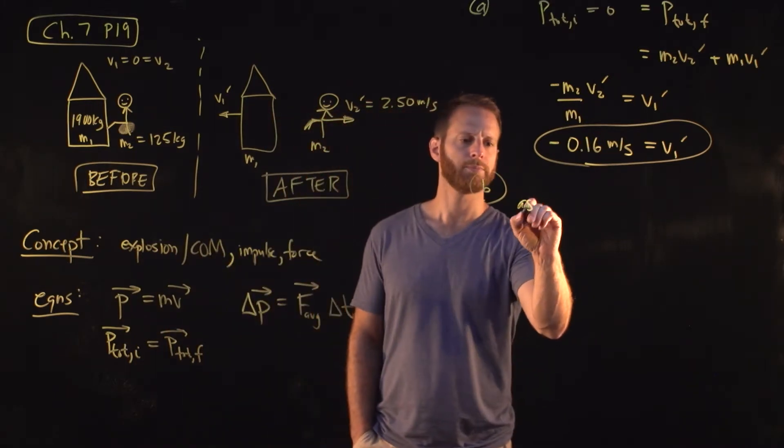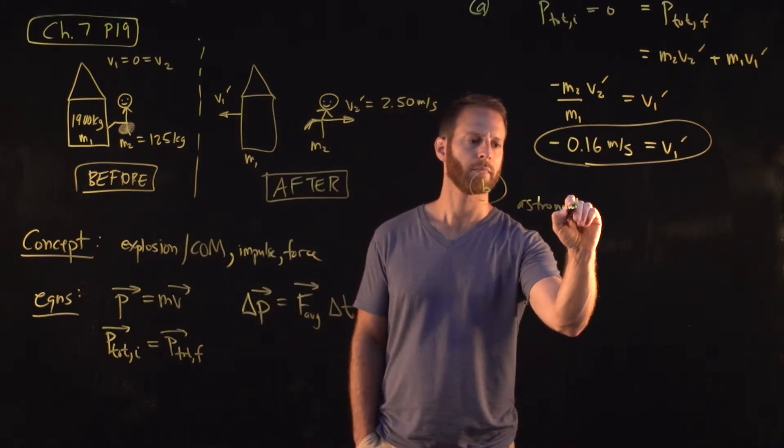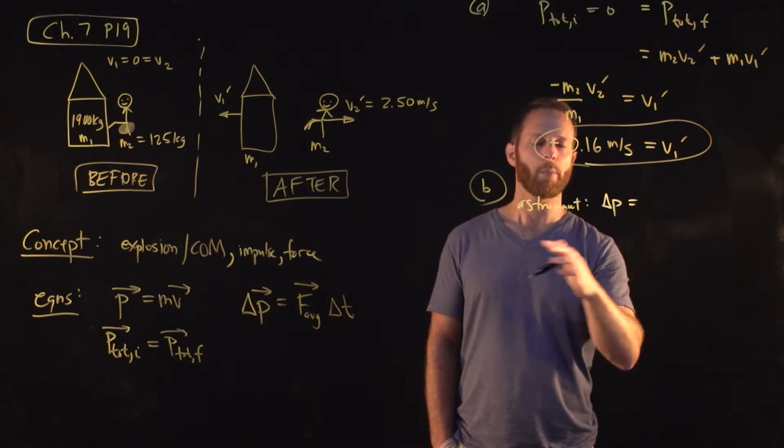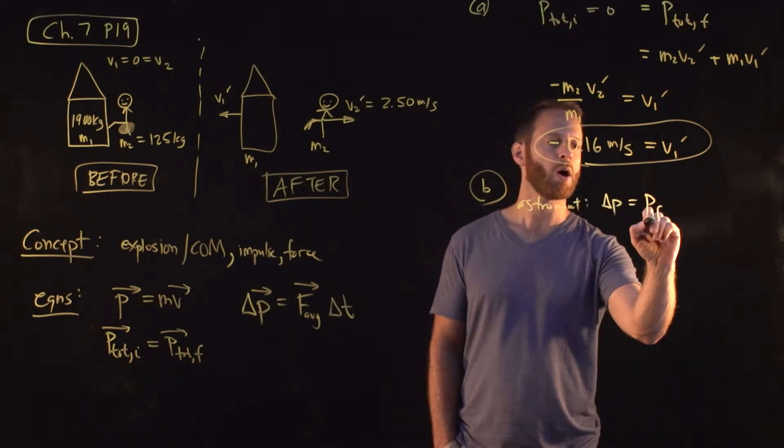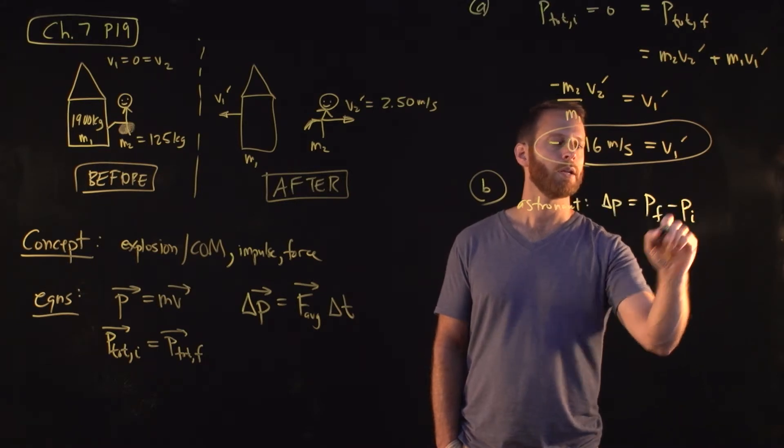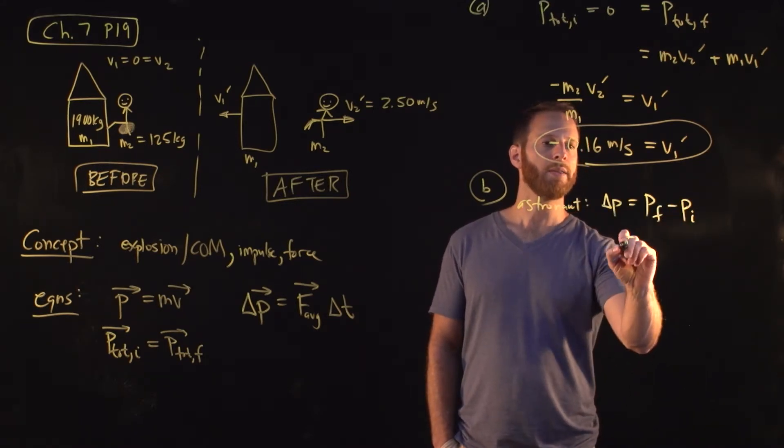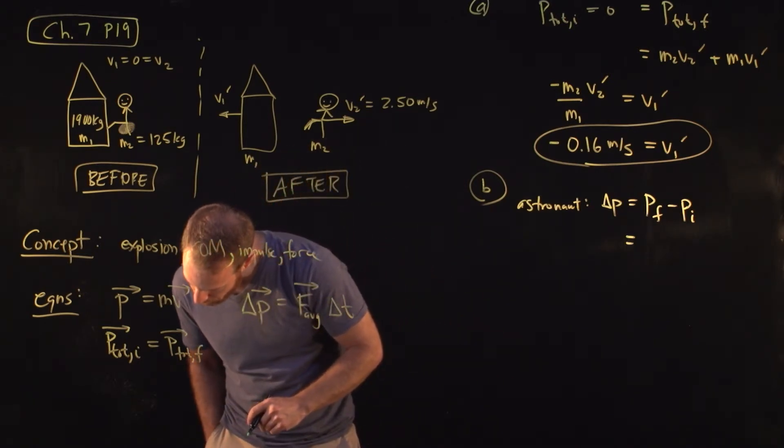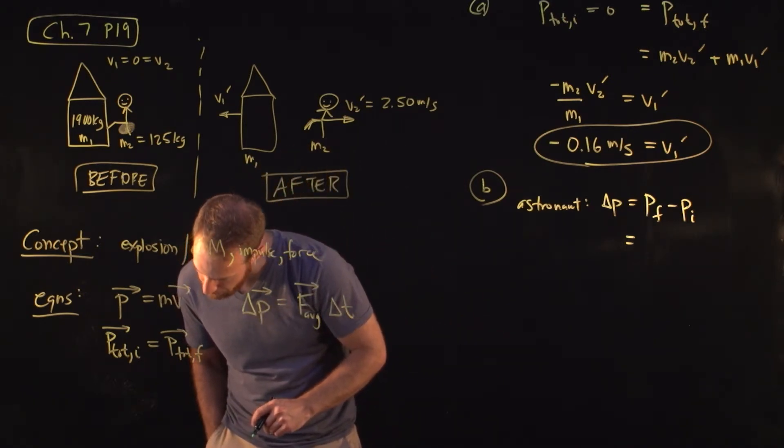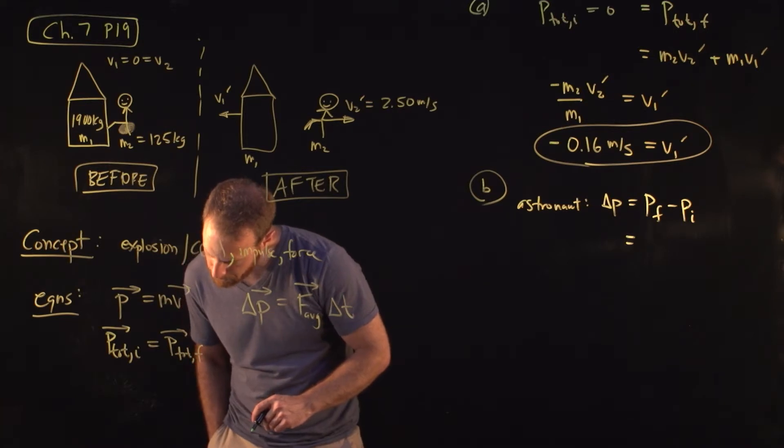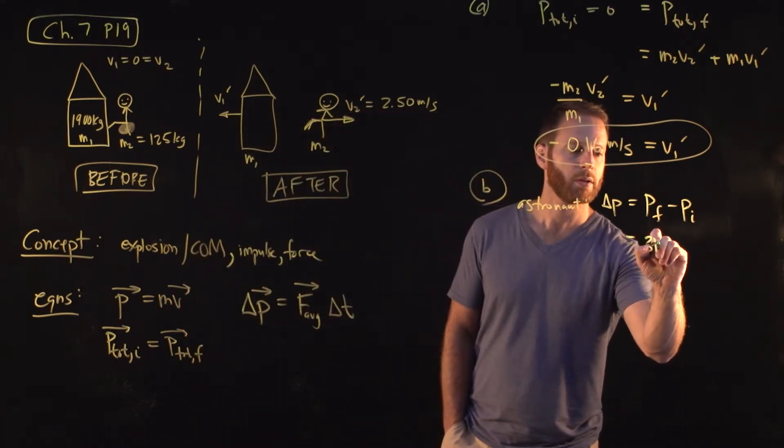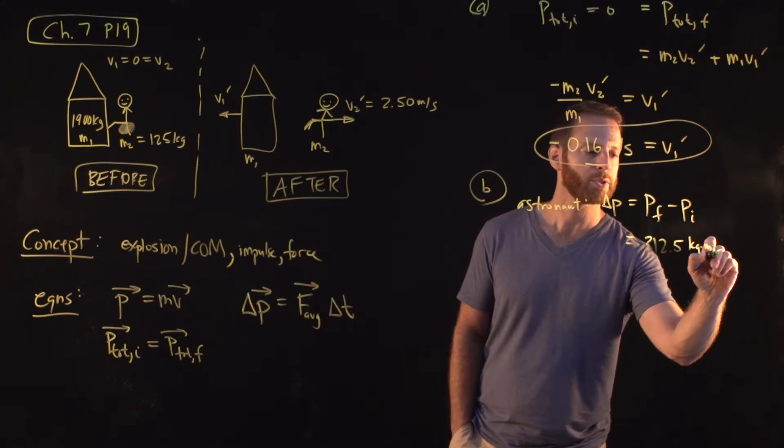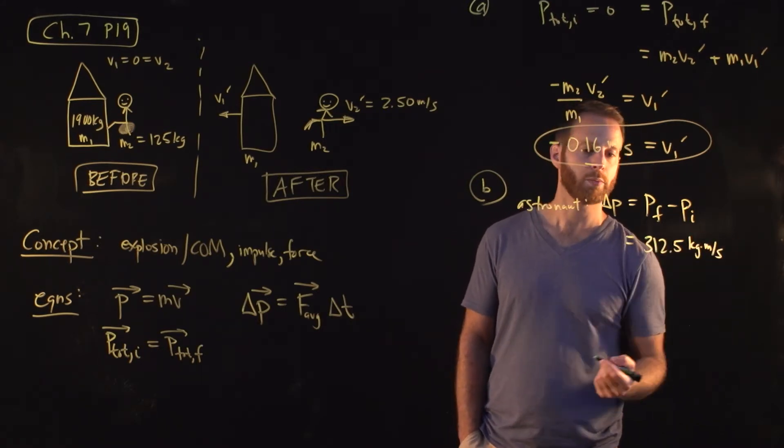So for the astronaut, we know the change in momentum. Remember, the change in momentum, this delta symbol, means the final quantity minus the initial quantity. In the end, the astronaut is moving and has a momentum given by the mass times the speed. That turns out to be 312.5 kilograms times meters per second, minus the initial velocity, which is 0.